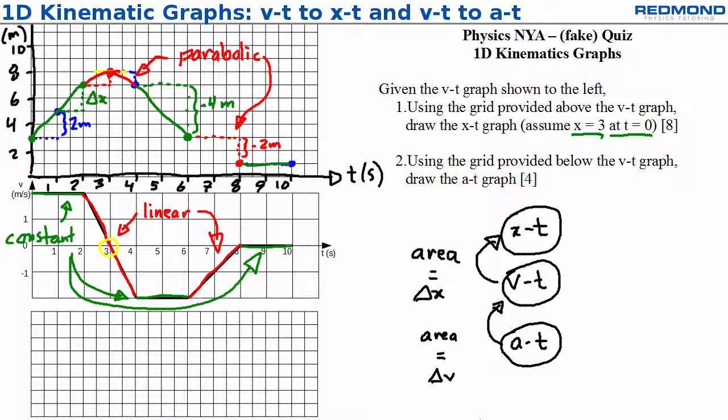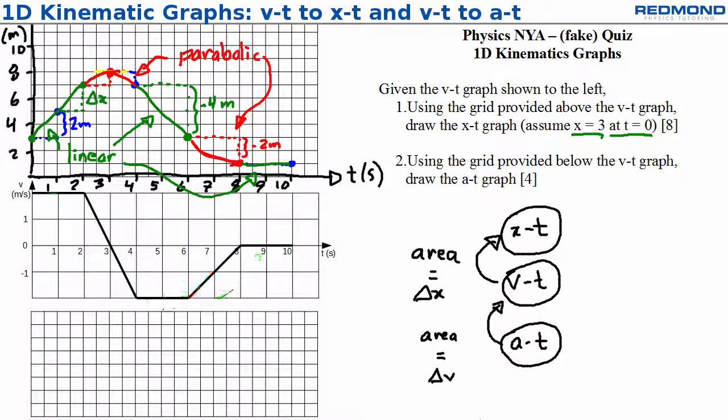Sometimes it's hard to tell from your drawing which parts are straight and which are parabolic, especially when your drawing is very small. To get the most marks on your quiz, you can label them like this. The second part of this problem is to find the AT graph. The slope of the VT graph gives the value of the AT graph, so this is much faster to solve.